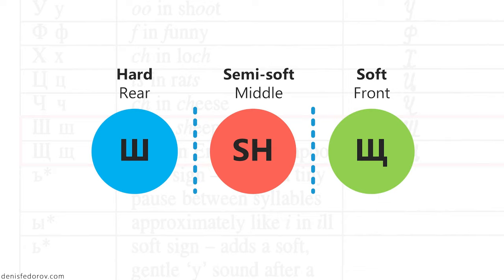So if you pronounce SH and push the tongue forward, your SH will sound closer to the Russian SHA, and if you pull the tongue backward, it will sound closer to the Russian SHA. However, in terms of the real-life audible difference between Russian SHA and SHA and their English counterpart SH, as a Russian native speaker I must say that the difference is subtle and unclear if we pronounce those sounds without context. But inside Russian words, the English SH doesn't sound very good. Let me demonstrate the difference.